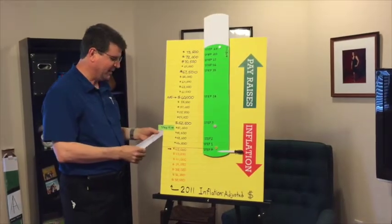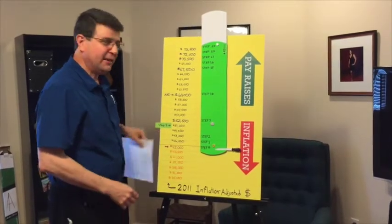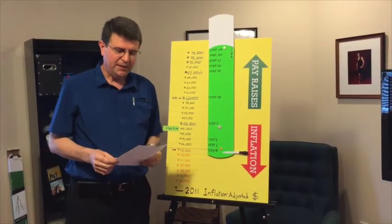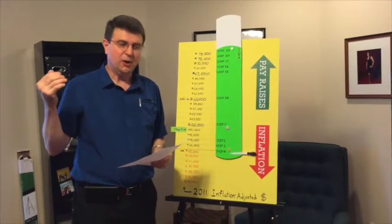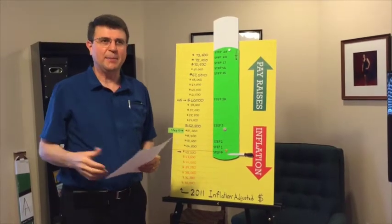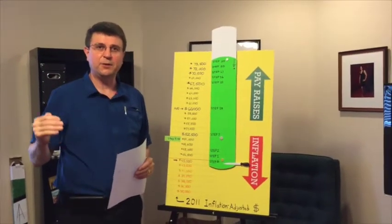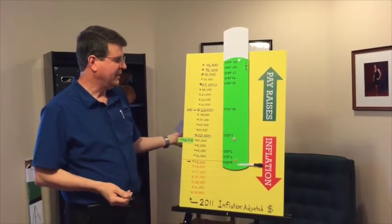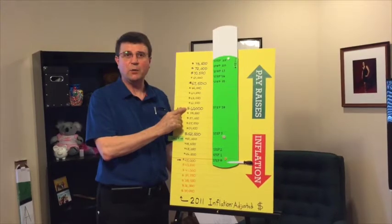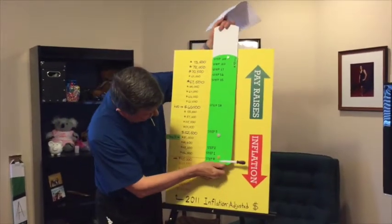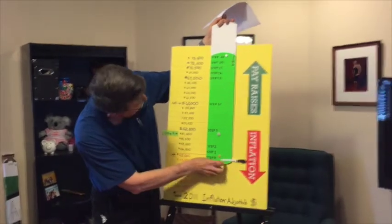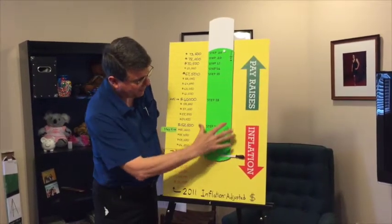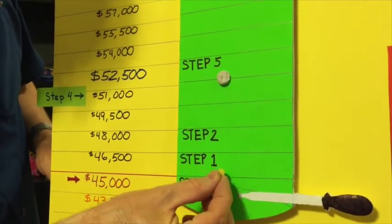In 2011, the inflation rate was 3% and we received a 2.5% pay raise, so the average teacher saw their pay fall about half a percent behind inflation. Using the average salary of sixty thousand dollars, half a percent of that is about three hundred dollars. So one year later we move the cylinder down a little bit — about three hundred dollars lower in buying power.